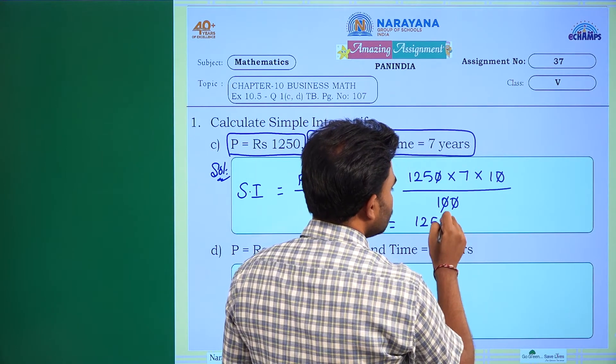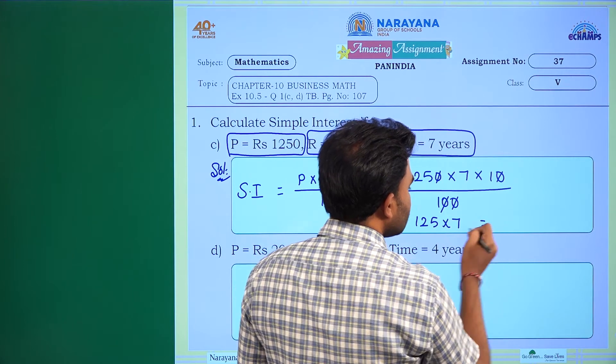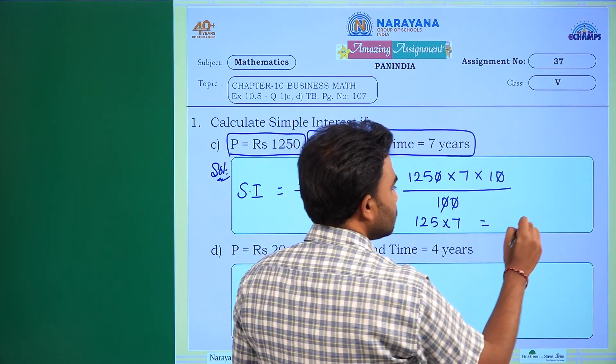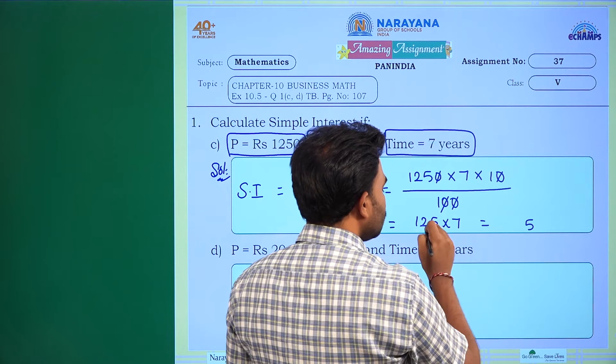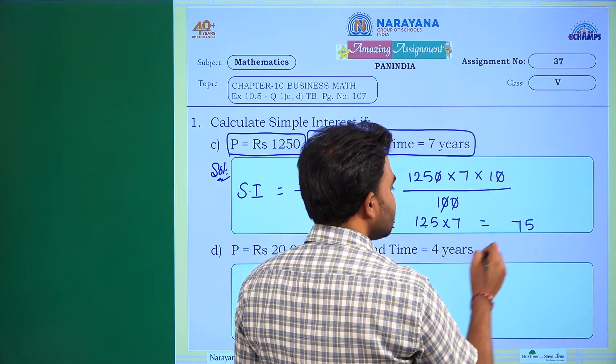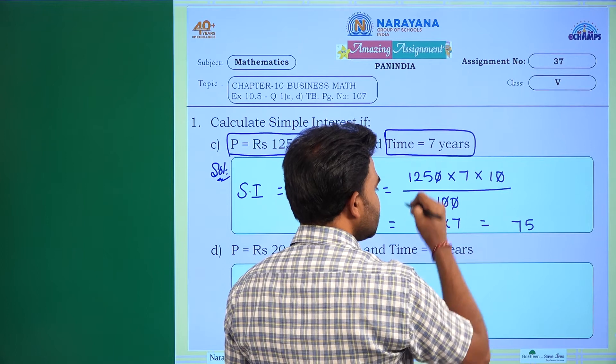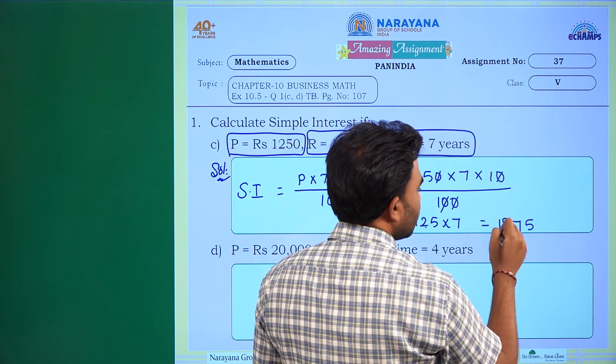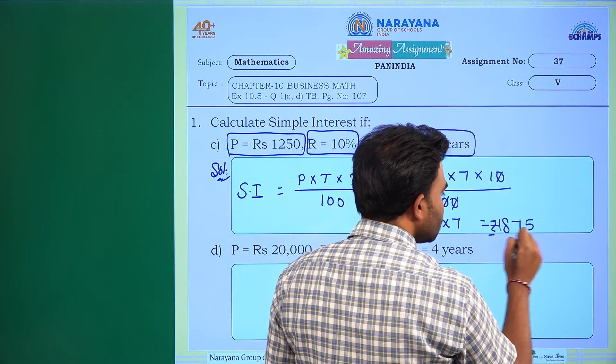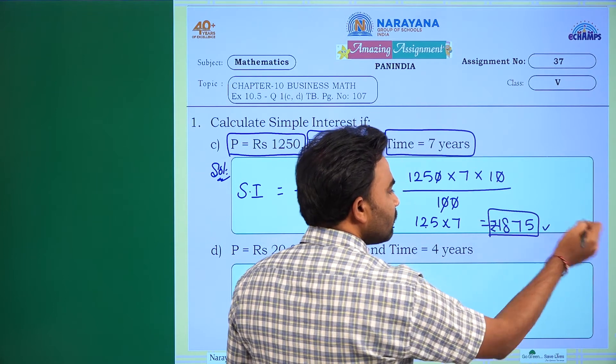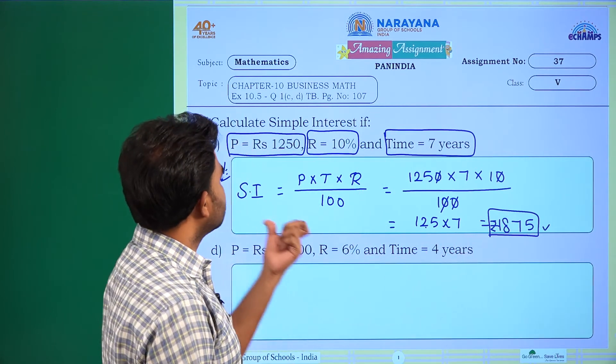125 into 7, multiply: 7×5 is 35, 7×2 is 14, 14 plus 3 is 17, 7×1 is 7, 7 plus 1 is 8. So this is Rs 875. This is the simple interest of this problem.